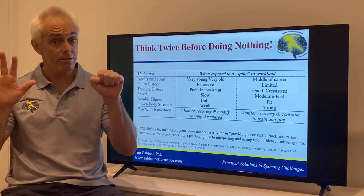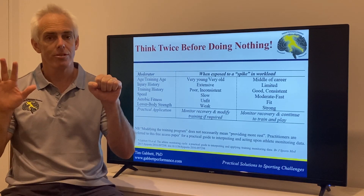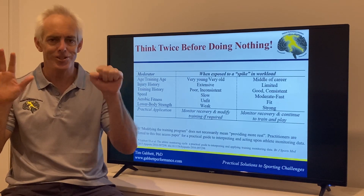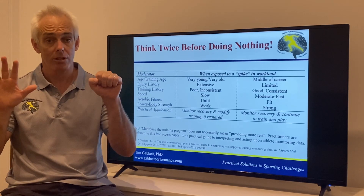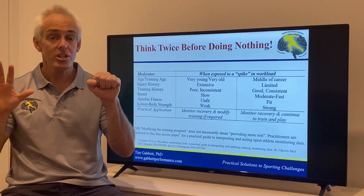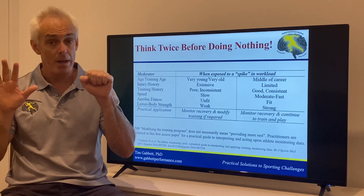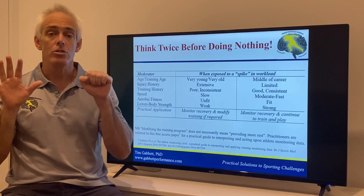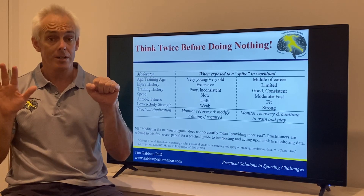When you compare those two athletes, the only thing that's similar is the acute chronic workload ratio. Everything else about those athletes is different, so of course we have to manage them differently. It's not just about the acute chronic ratio — we need to take into account other information when interpreting data to make the best decisions for our athletes. We need to think twice before doing nothing.